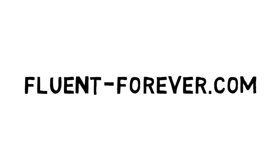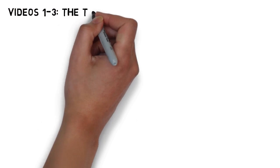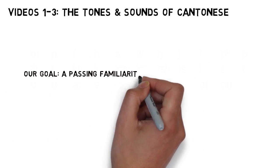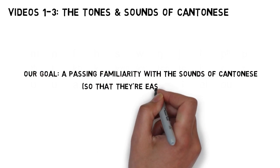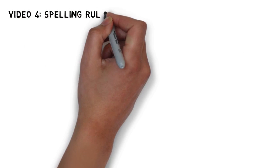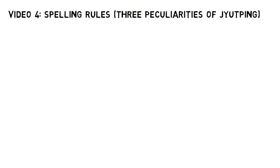Hi, this is Gabe from FluentForever.com. At this point, we've gone through all of the sounds of Cantonese. If you're using one of my pronunciation trainers, it's going to take you through all of these sounds, train your ears to hear them more accurately, and teach you the spellings that produce them. Then it'll push all of that data into your long-term memory. If you're not, that's fine too. I made these videos to give you a passing familiarity with all the sounds of Cantonese so that when you study them in depth, they're going to feel more familiar. That'll make them easier to learn. In either case, I want to show you some peculiarities of Cantonese's Jyutping alphabet that should make the spelling system, which is really straightforward, even more sensible.